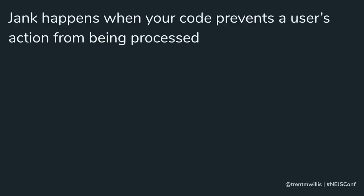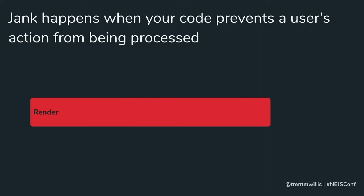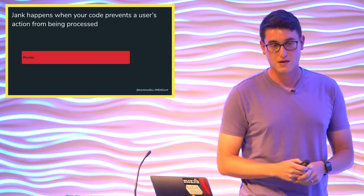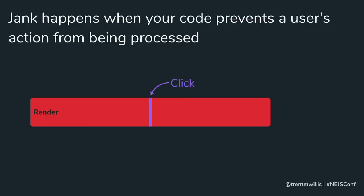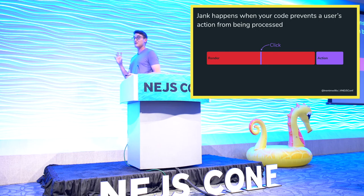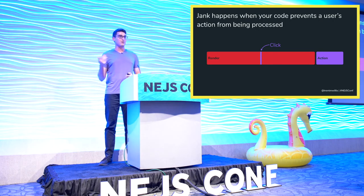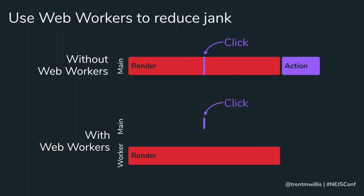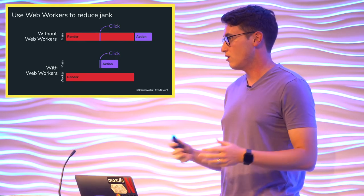Jank in our generative art case is caused simply by our render function blocking the main thread — when an event like a click action happens, the browser has to wait until we're done processing all that code before it can handle it. We can fix this by using web workers. Web workers give us a different execution context to run our code in, so we can have our render code run in a different thread. When a click event happens in the main thread, we can handle it right away and the user will never be impacted.